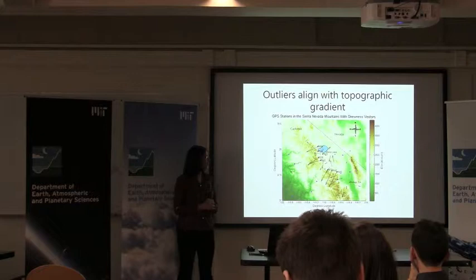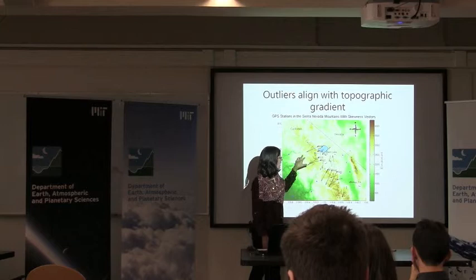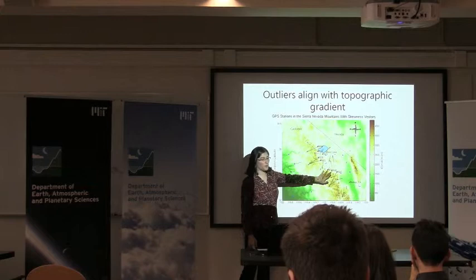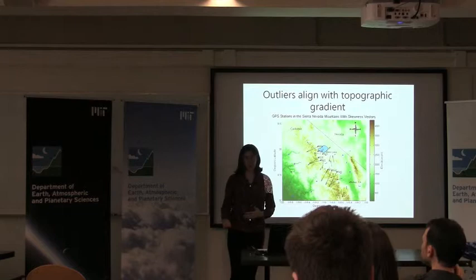As another example, I looked at a region of stations in the Sierra Nevada mountains — this chain of mountains in California, bordering the state of Nevada. There's a collection of stations here, many of which often show outliers skewed in one preferred direction. Many of these outliers point in a direction towards the mountains. This row of stations, more often than not, points in the direction where the topography is high.